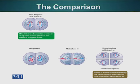At metaphase two, this is similar to the mitosis metaphase — the individual chromosomes are lining up at the metaphase plate. At this stage, the centromere will divide, the cohesin molecule will be disintegrated, and the individual chromatids will now separate and move to the opposite poles. The end result is four daughter cells, each with half the number, or N number, of chromosomes.